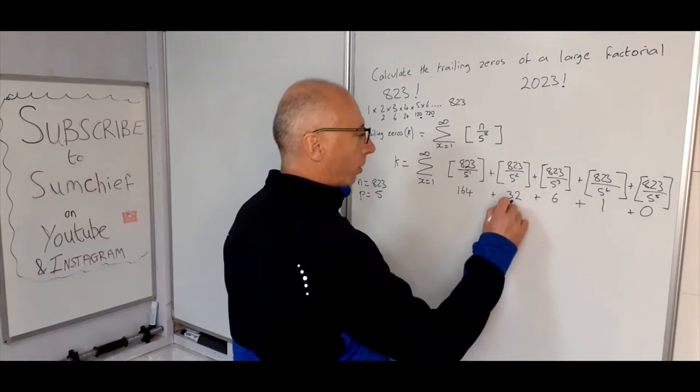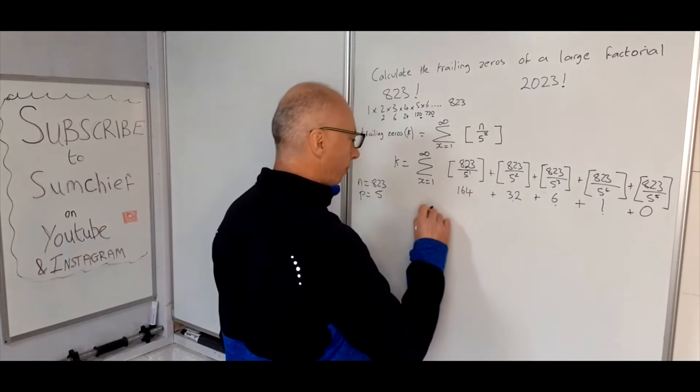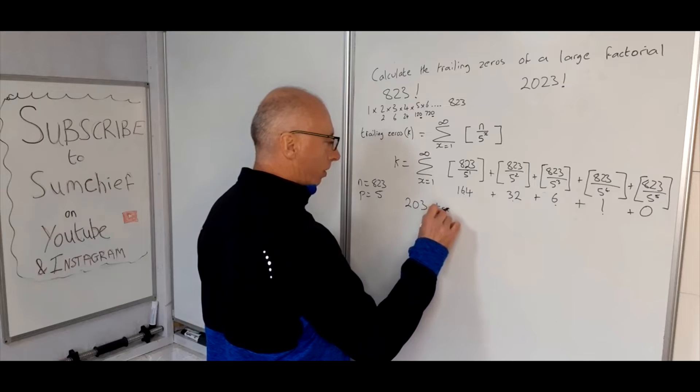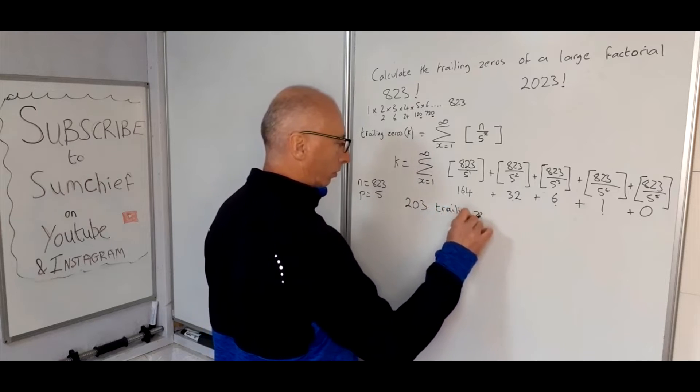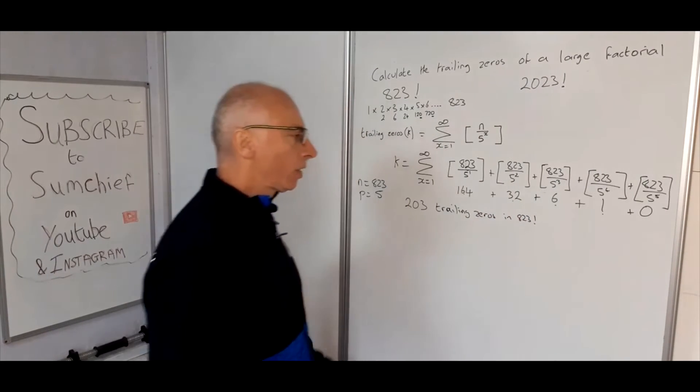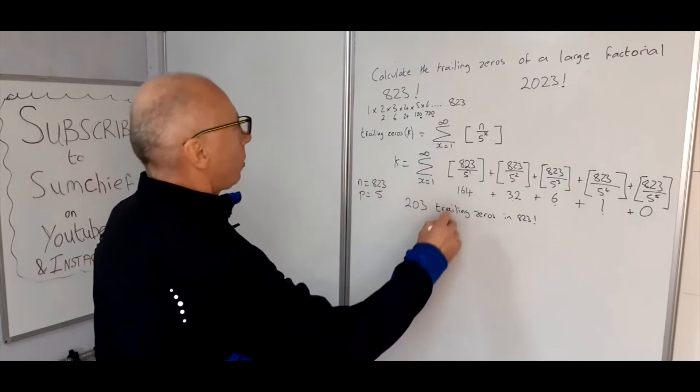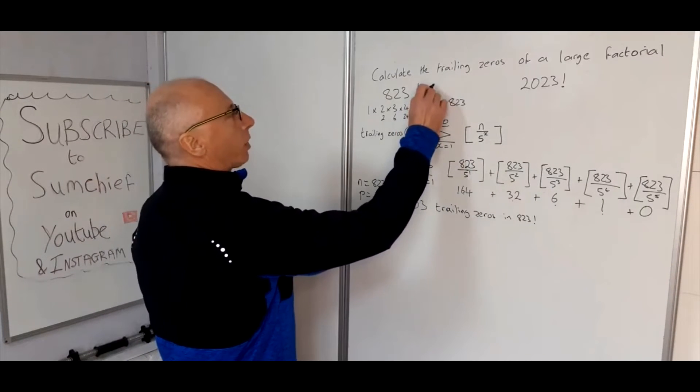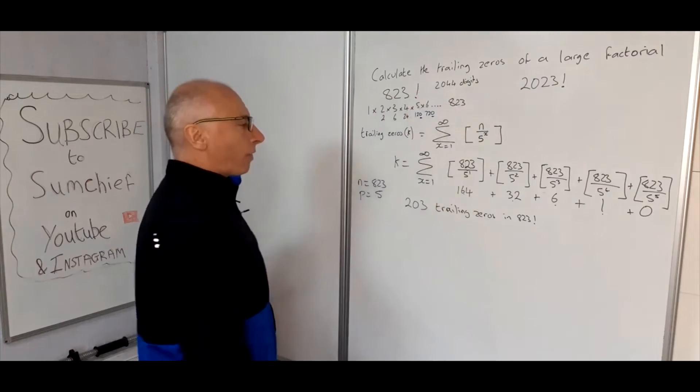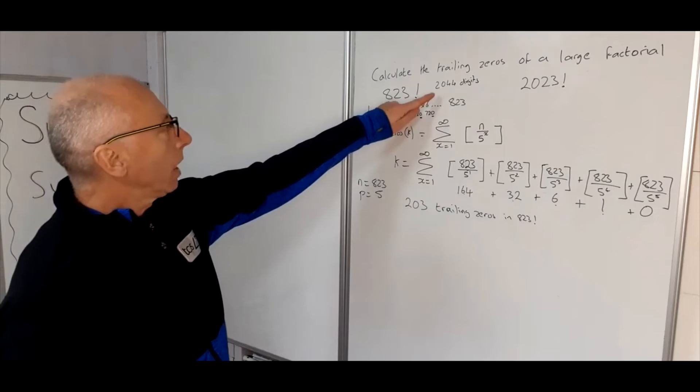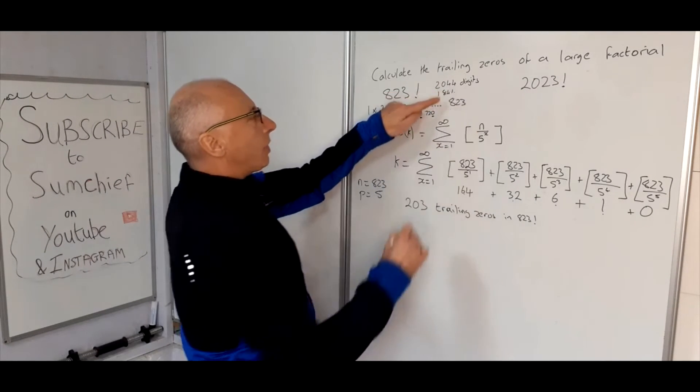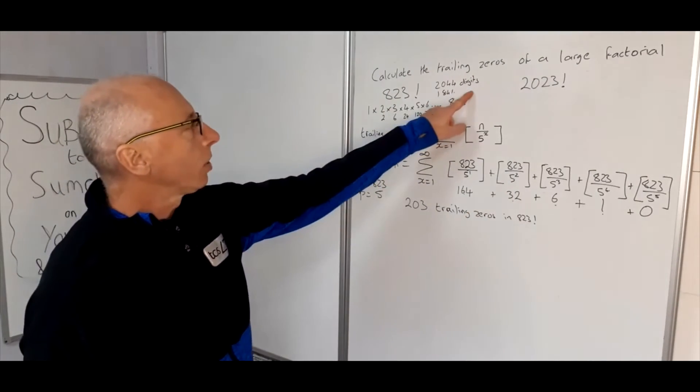So 164, 196, 202, 203. So therefore we can say there are 203 trailing zeros in 823 factorial. So if you write that number out, I think I said 2044 digits for 823 factorial, so you would get to 1841.